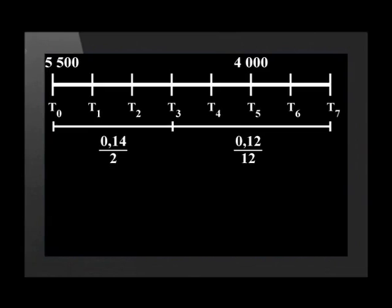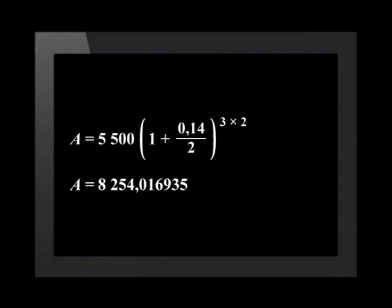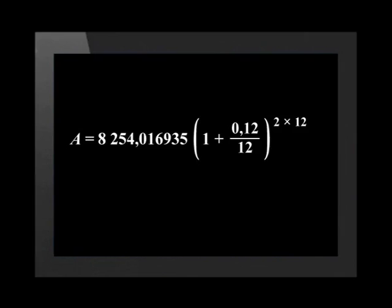Now we'll work through the timeline step by step. Remember that the formula for compound interest is A = P(1 + i)^n. With the longer method, we start a new calculation with every change on the timeline. The first calculation deals with the initial deposit of 5,500 rand, invested at 14% per annum compounded semi-annually for three years, coming to a total of 8,254.016935. The interest rate then changes at the end of three years to 12% compounded monthly.